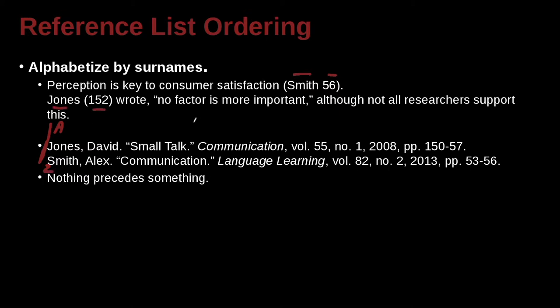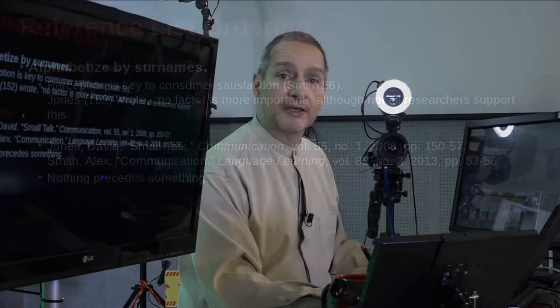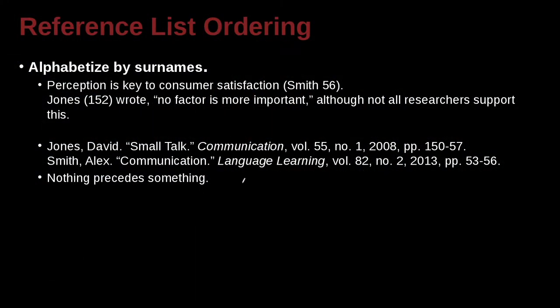An important rule to remember is that nothing precedes something. If you have an empty space, that comes before zero and before A. For example, if you have two authors both named Smith, and one is just 'Smith' with no first name while the other is 'Smith Alex,' then the bare 'Smith' comes first because empty precedes something.